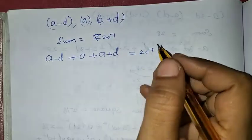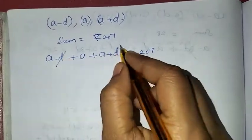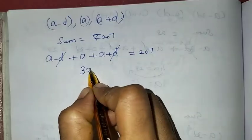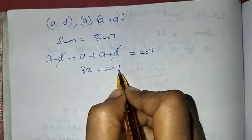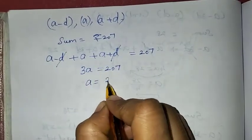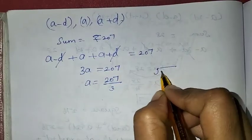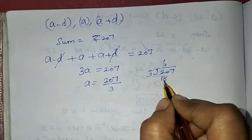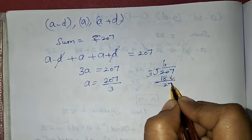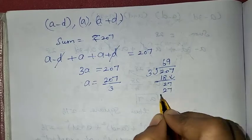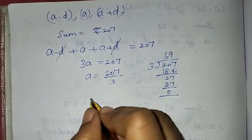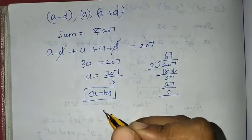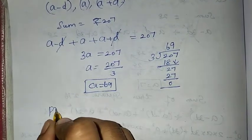Simplifying, the minus d and plus d cancel out, leaving a + a + a = 3a = 207. So a = 207 ÷ 3. Dividing: 3 into 207 gives 69. So a = 69.